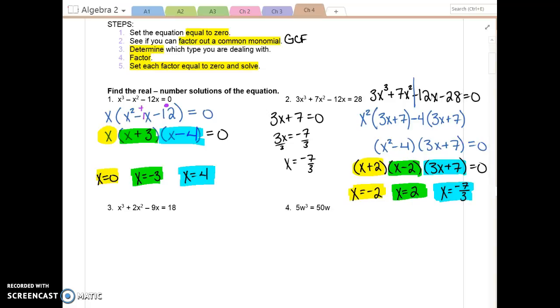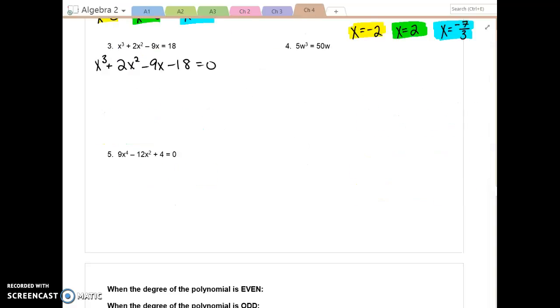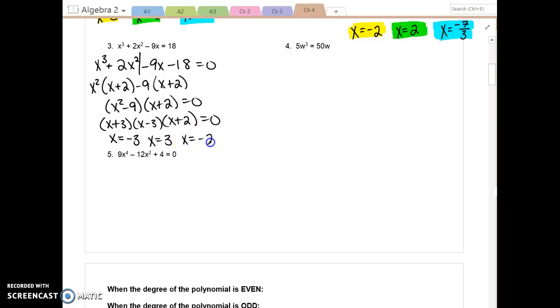Try example 3 on your own. x cubed plus 2x squared minus 9x minus 18. We would factor by grouping and get x squared minus 9 times x plus 2, which factors further into x plus 3, x minus 3, x plus 2. The order that you have those parentheses does not matter. Your solutions are negative 3, positive 3, and negative 2.